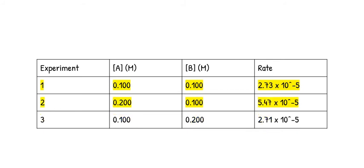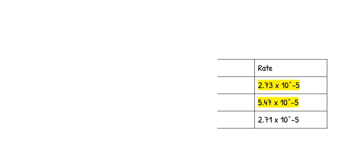Next, you can look at experiments 1 and 2 in which the concentration of B remains the same. You can see that the concentration of A doubles and the rate also doubles. This means that the reaction is first-order with respect to A because when the concentration of A doubles, so does the rate. You would always use experimental data to find the rate of reaction.